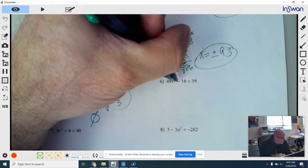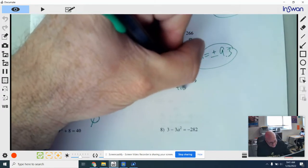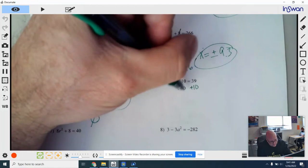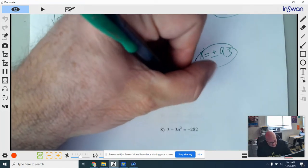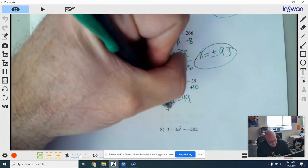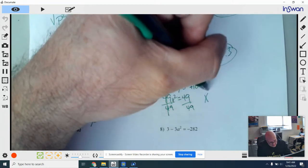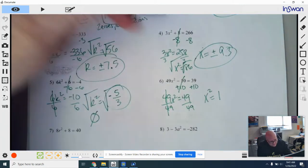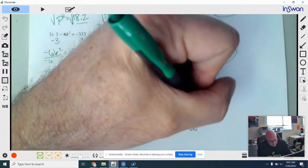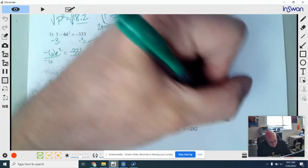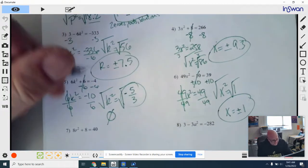Number 6. I'm going to go ahead and add 10 to both sides. So it cancels out. And you get 49x squared equals 49. You can divide both sides by 49 then. And you get x squared is equal to 1. Take the square root. And we see, well, that's going to be x equals plus or minus. Square root of 1 is 1.